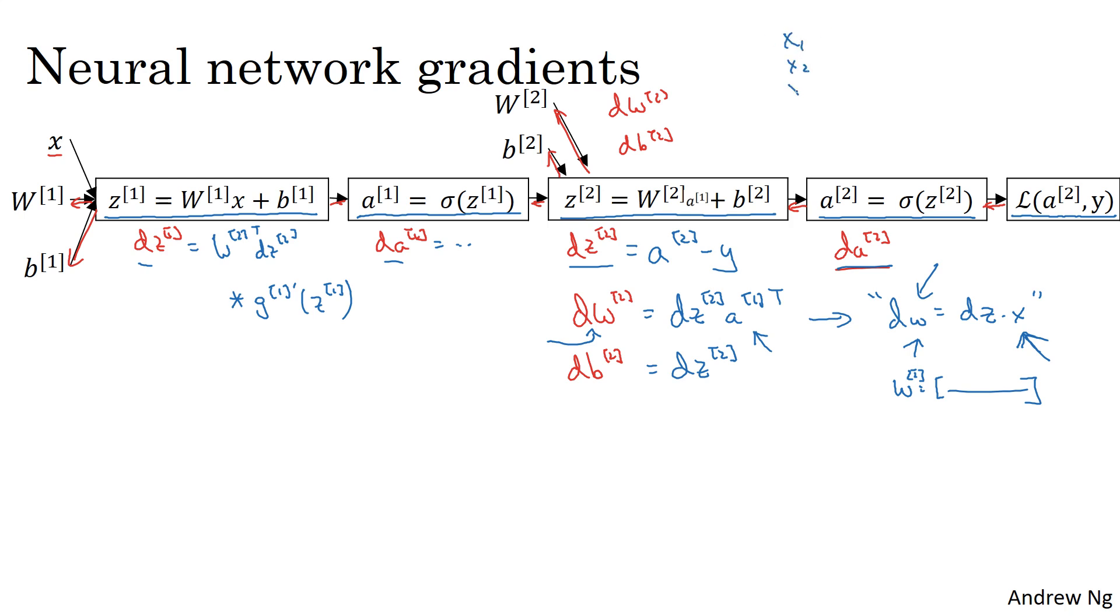If you have a neural network that looks like this, outputs y, so if you have n0 equals n0 input features, n1 hidden units, and n2 so far, and n2 in our case just one output unit, then the matrix w2 is n2 by n1 dimensional.